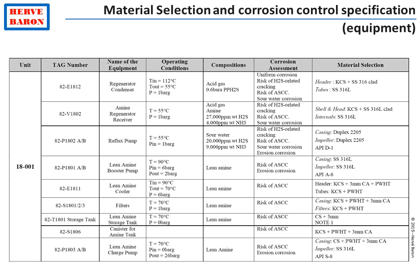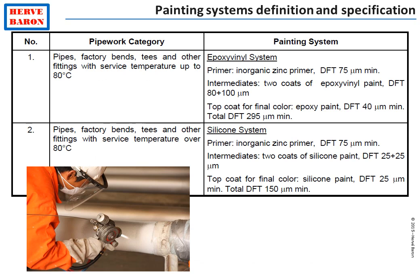The selection of materials of construction does not end the work of the materials specialist. He also specifies the type of coating to be applied to protect against external corrosion, defining various coating systems for various conditions — in particular, based on the temperature of the lines and equipment. A painting specification is issued, defining the surface preparation and paint system for every service.